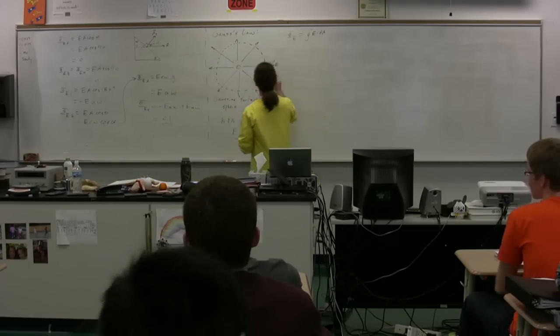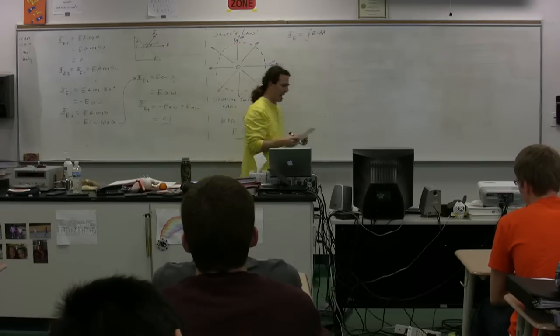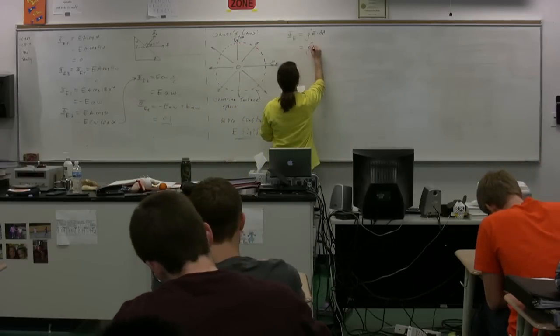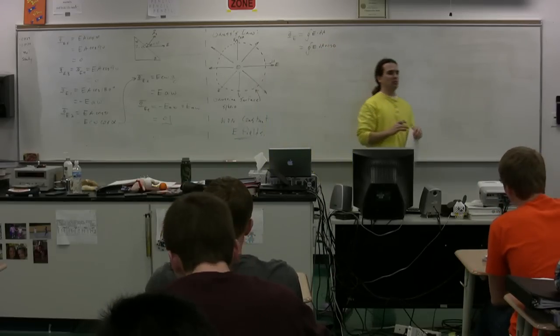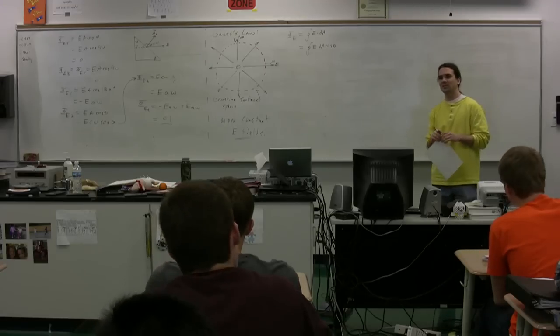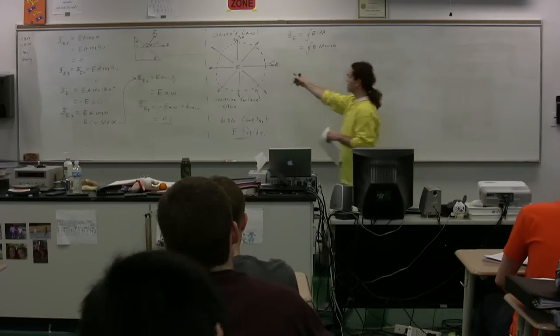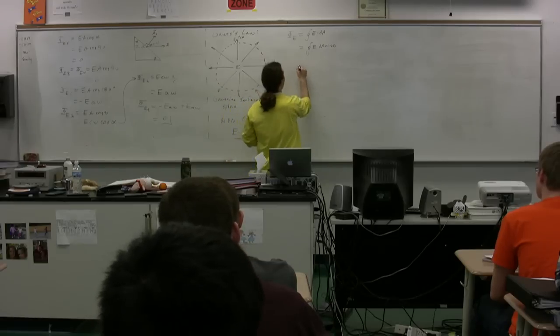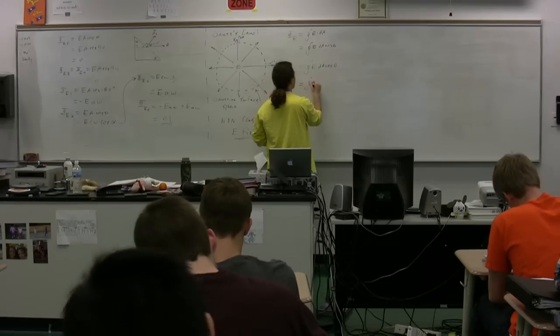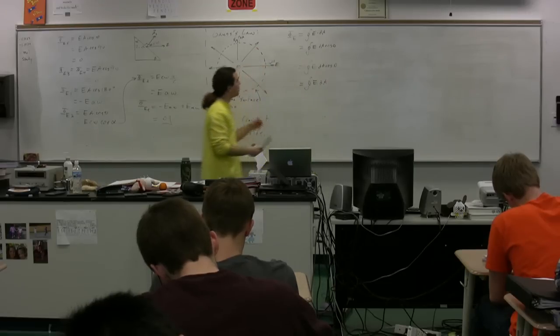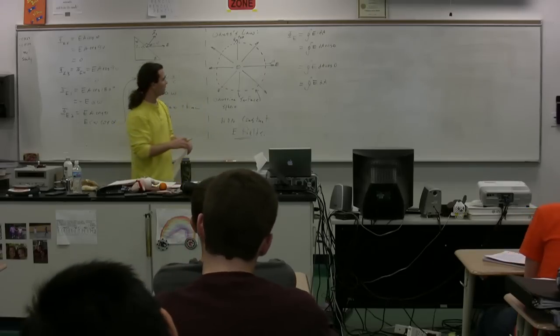When we look at this, we have dA. We've already talked about the direction of dA. We've already said it's in the same direction as the electric field. So, this is equal to the closed surface integral of E dA times the cosine of theta. We know the angle between E and dA. Class, what is it? Zero. It's always in the same direction, so the angle between these two is zero. So, we have the closed surface integral of E times dA times the cosine of zero. In other words, this is equal to the closed surface integral of E dA. Basically, we were able to get rid of the dot product, and we know that the cosine of zero is just one.